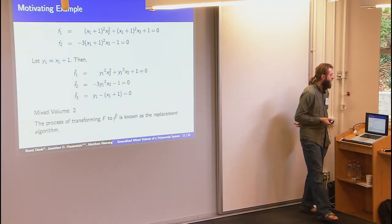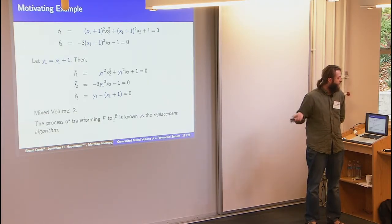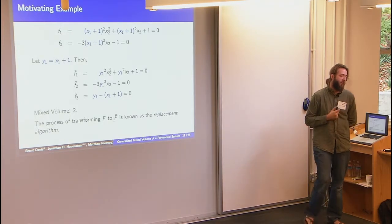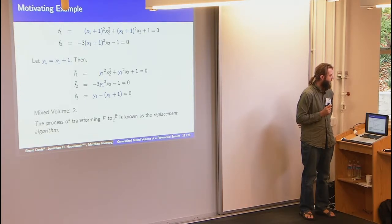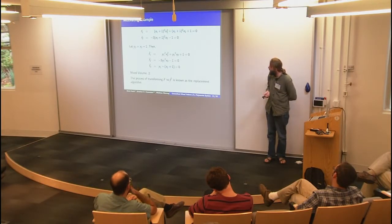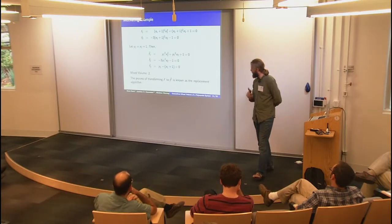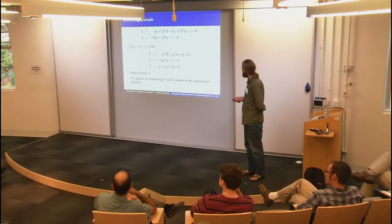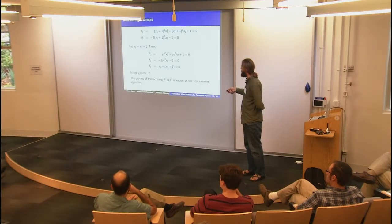An audience member notes: you're counting a different thing — you're not counting the number of solutions of the original. The speaker responds: under an appropriate projection, if we project off the y's, we get our original system back with the same number of solutions, because f3 is only linear. Another question: the BKK bound only counts solutions on the torus, and here we don't have solutions when x or y is zero, because of the constant term.